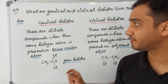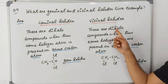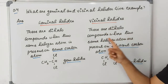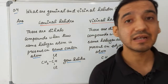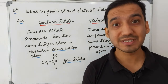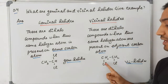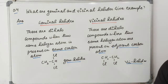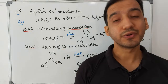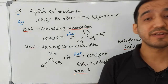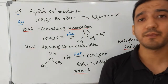Vicinal halides are also dihalo compounds where two same halogen atoms are present on adjacent carbon atoms — that is, next to each other. When two same halogens are on adjacent carbons, we call them vicinal halides.